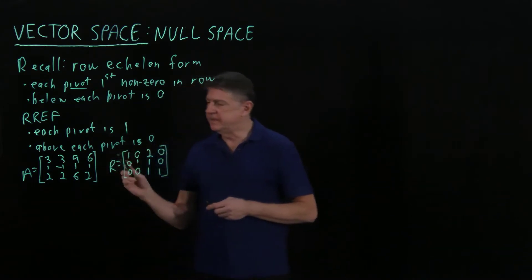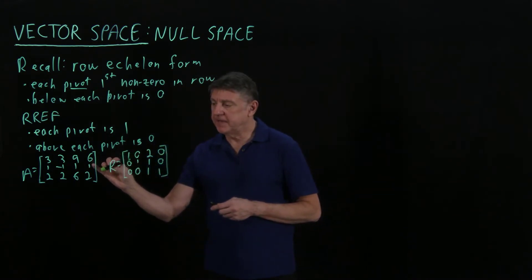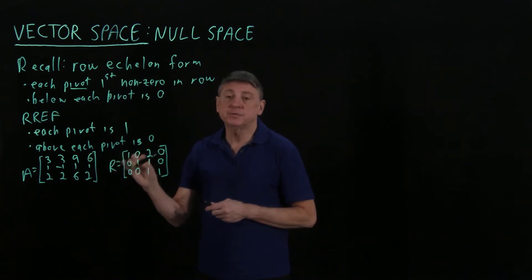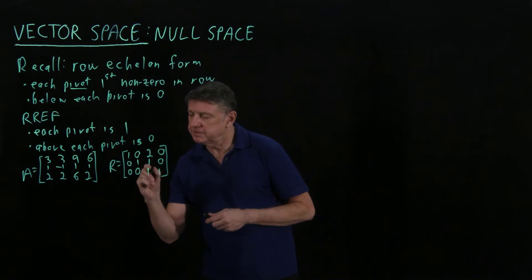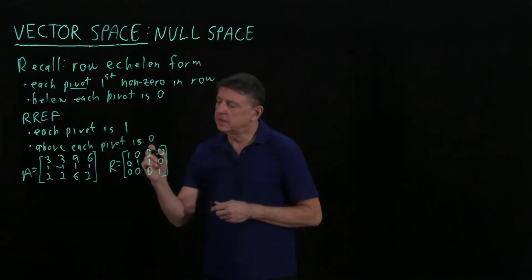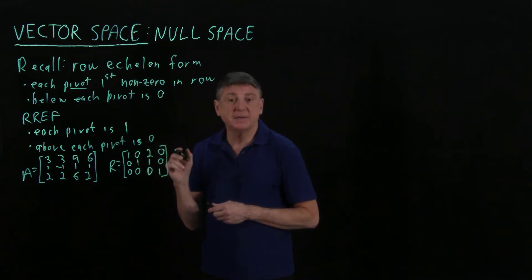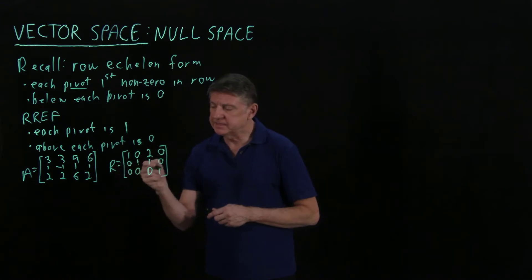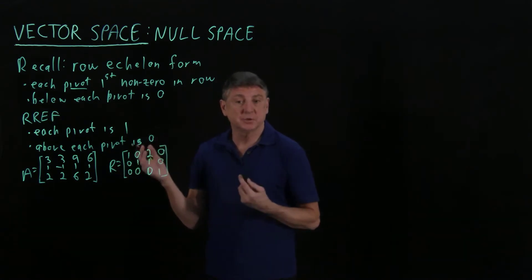And so in this, this is a pivot, and everything below it is 0 because it's in row echelon form. This is the first non-zero entry, and below and above it is 0. This is not the first non-zero entry. Below this has to be 0, and above it can be non-zero. In fact, it's important that it's non-zero. And then this is a pivot, so there's nothing below it, and everything above it is non-zero.